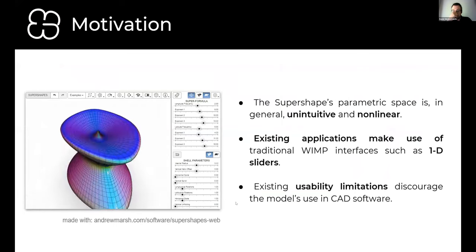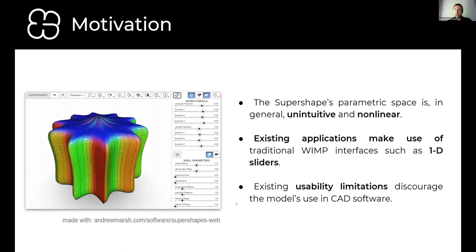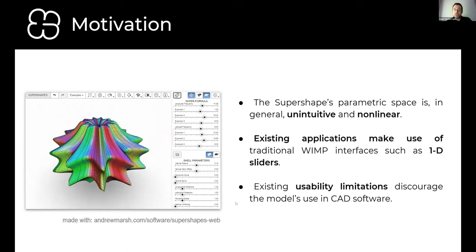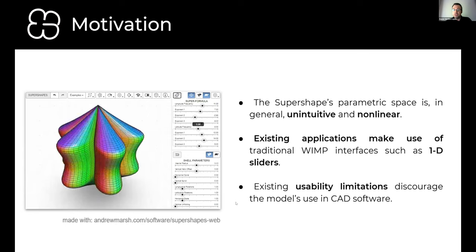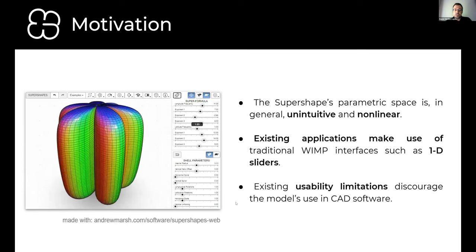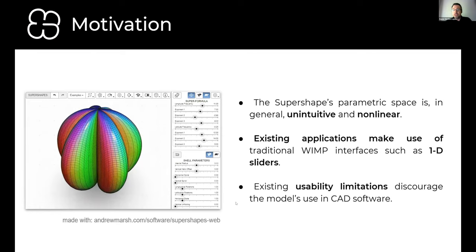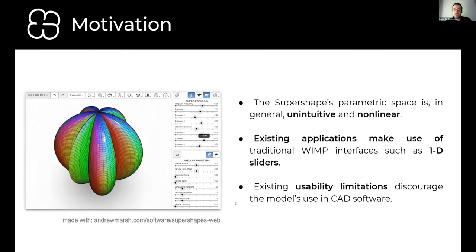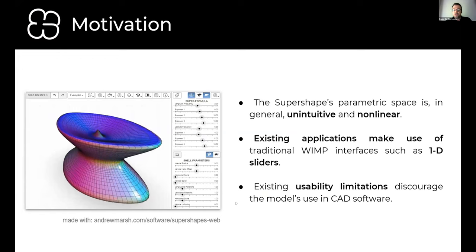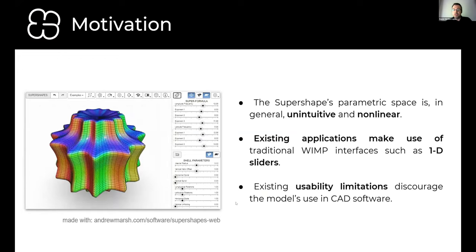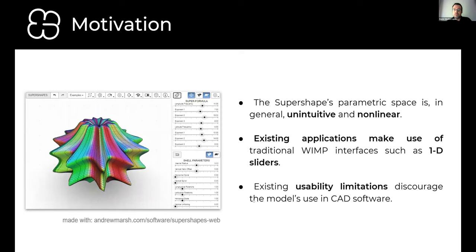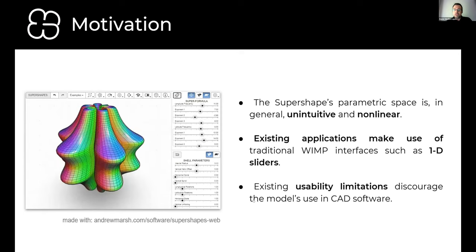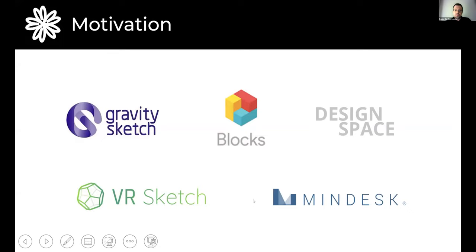The issue is that interacting with super shapes is quite challenging. First, users are left to probe a rich and very dense collection of shapes using just a set of independent 1D sliders. The second challenge is that the exponent parameters of the formula are nonlinear in nature, which makes them particularly difficult to grasp using conventional 1D sliders. There are several VR apps that explore the benefits of VR in parametric design, although none of them use super shapes as a modeling primitive.